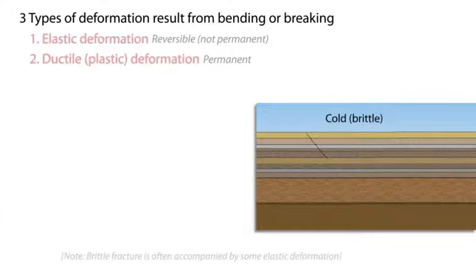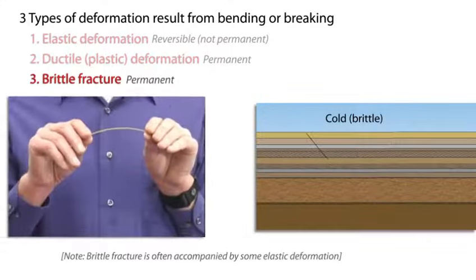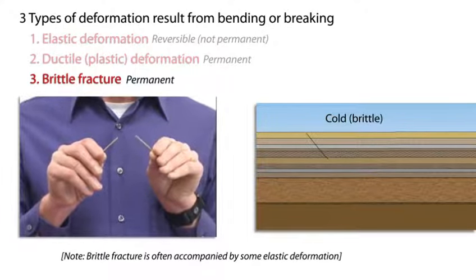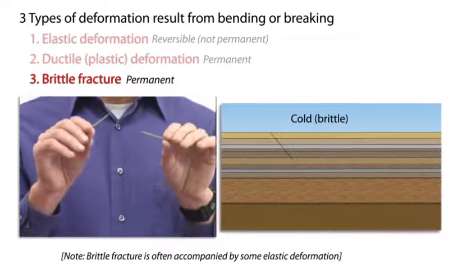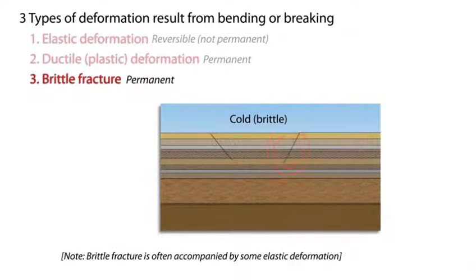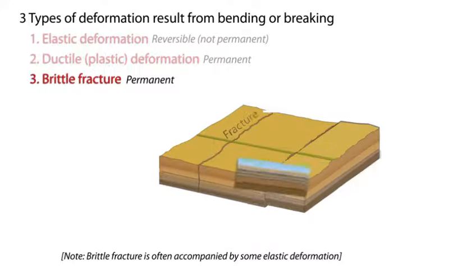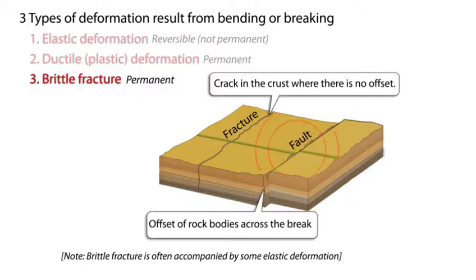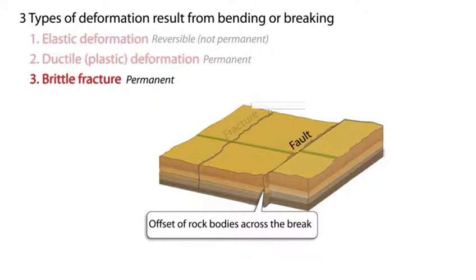We have already explored how uncooked spaghetti can deform elastically. However, when the force applied to the spaghetti exceeds its strength limit, the spaghetti will bend and then break. This type of permanent deformation is called brittle deformation. In rock bodies, a fracture is a break that has experienced no movement along the crack. In contrast, a fault initiates on a fracture, but one side shifts relative to the other. Most faults are locked by friction, unable to move, except by elastic deformation or the abrupt jerk of an earthquake.